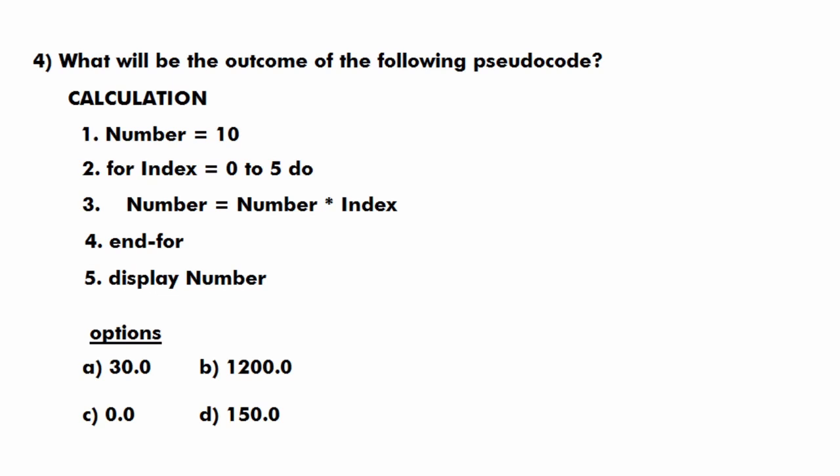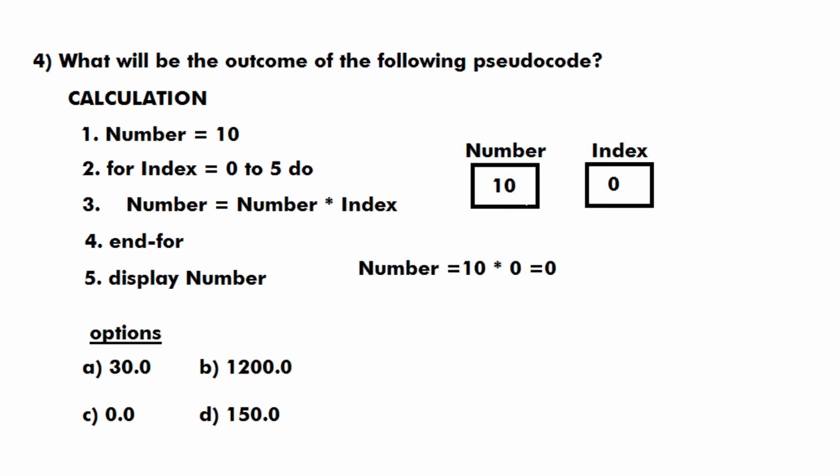Moving to the 4th question: find the outcome of the following pseudocode. This is a 5-line pseudocode where in the first line we have a variable number with value 10. There is a for loop with variable index iterating from 0 to index less than or equal to 5. Inside the loop the expression is number = number * index. On the first iteration, number = 10 * 0 = 0, so number becomes 0.